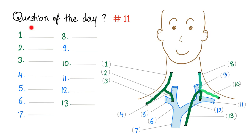Question of the day — here is my 11th question. All of these questions and answers are on my Facebook page. We have numbers — try to match them with the structure. Let me know down below in the comment section what you think, and let's see who will answer it first. Remember, the green letters are lymphatic vessels and the blue letters are veins, just to make it easier.